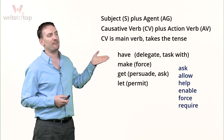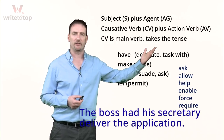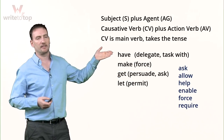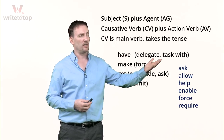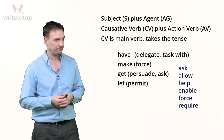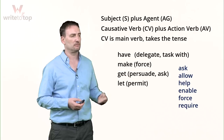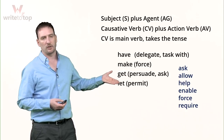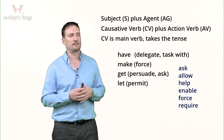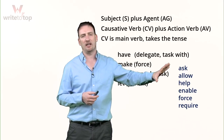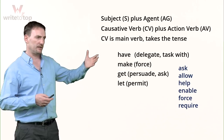The main causative verbs you need to keep in mind are: have, make, get, and let. For example, 'The boss had his secretary deliver the application.' Have is the causative — basically we are delegating or giving someone a task. If you make someone do something, you're forcing them. If you get someone, you persuade or ask them. If you let, you permit. There are also other verbs like allow and ask that can be used in the causative structure.